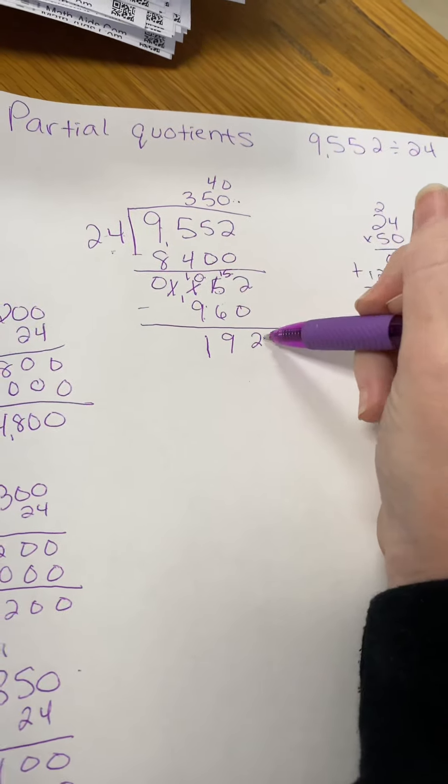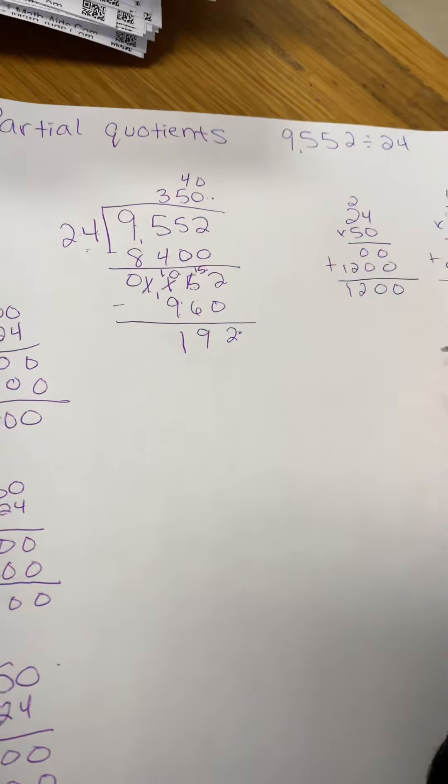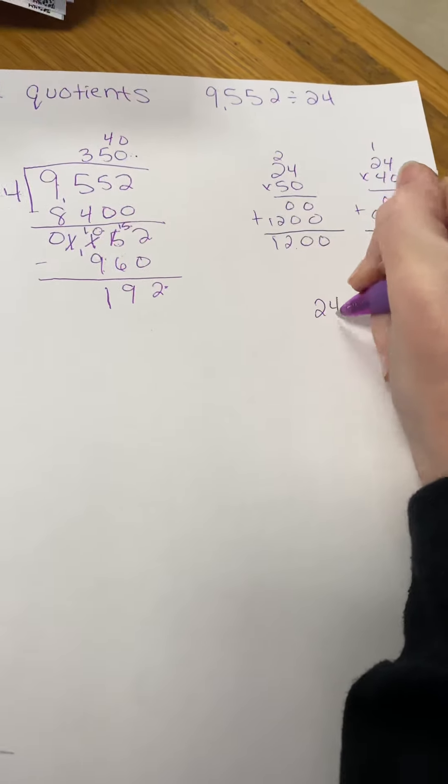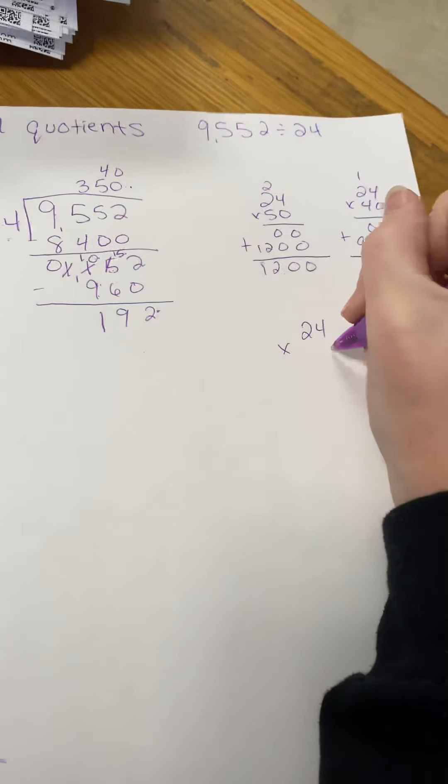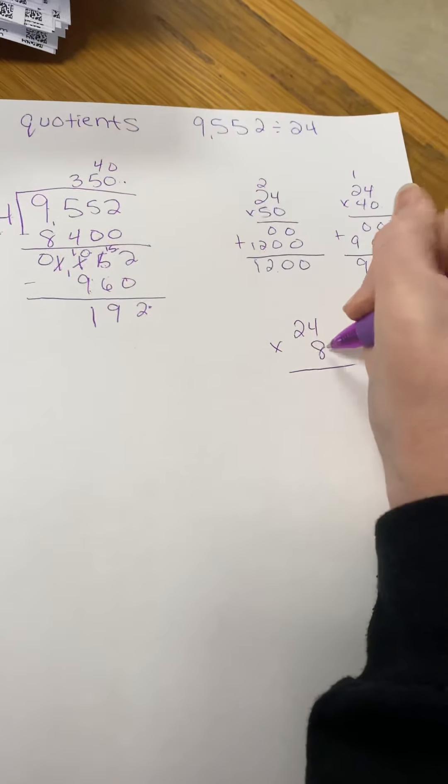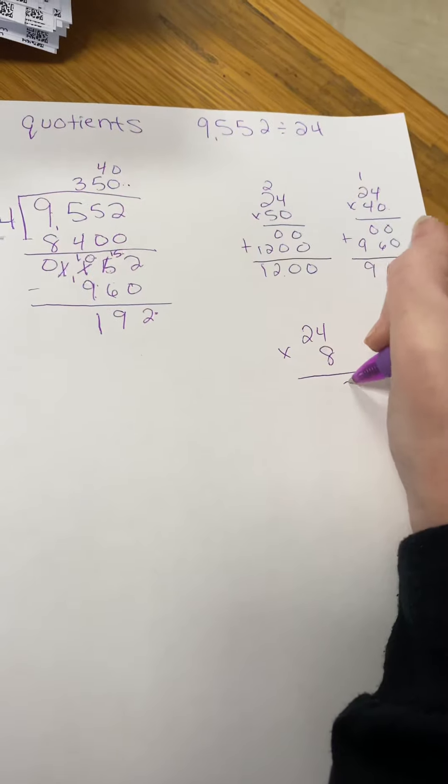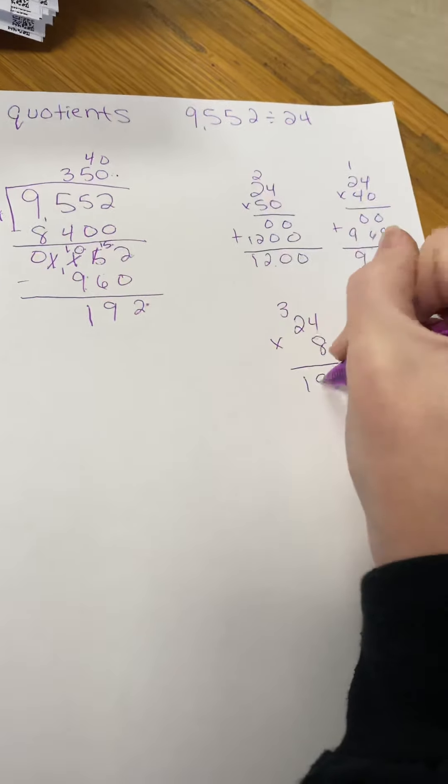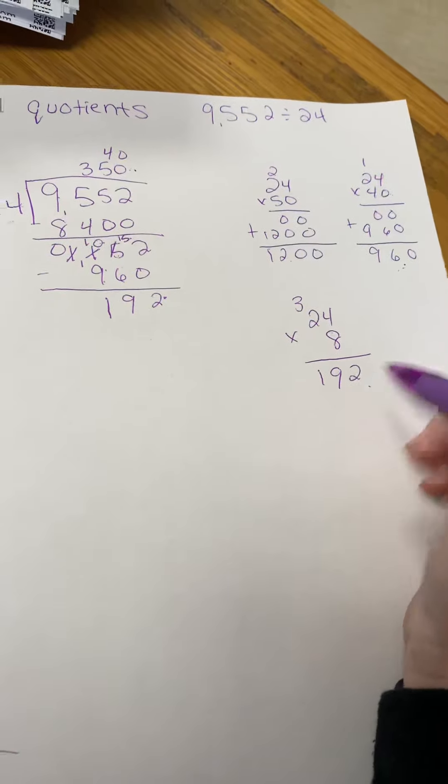Now, since this is not a 0, you still have to continue going. 24 times what is going to give you somewhere close to 192? Let's try 24 times 8. 8 times 4 is 32. 8 times 2 is 16. Plus 3 is 19. You should get 192.